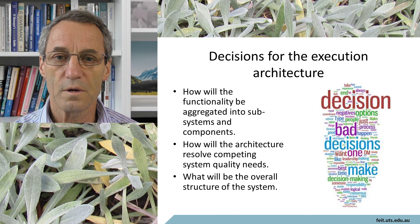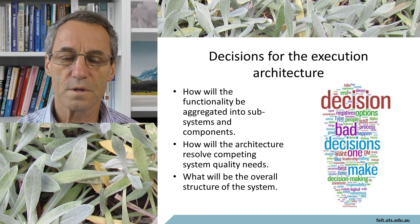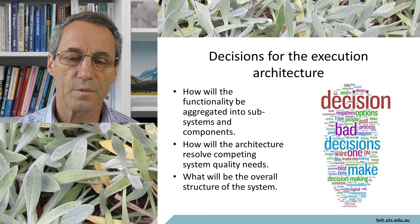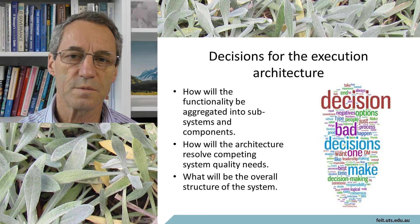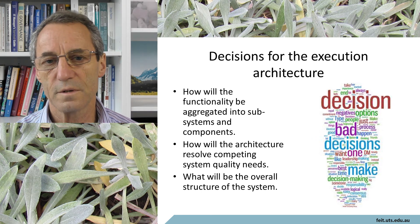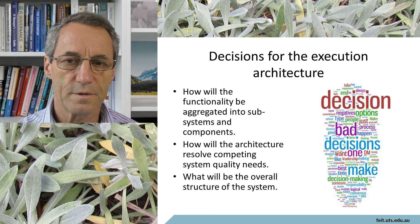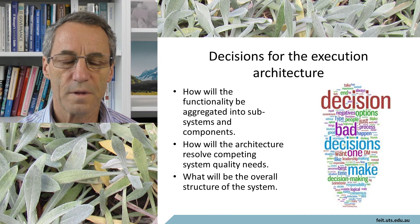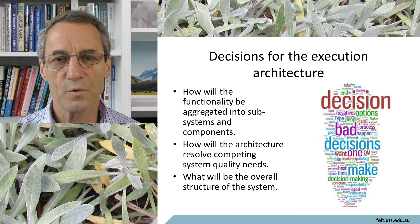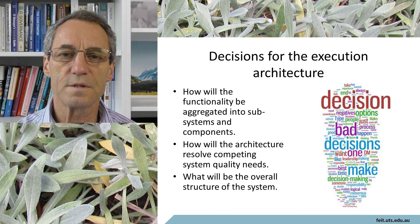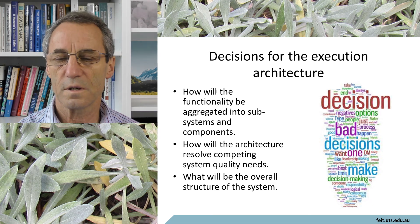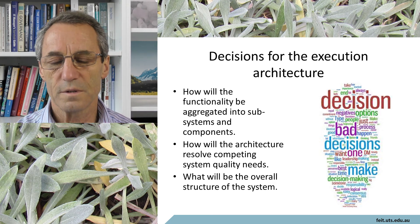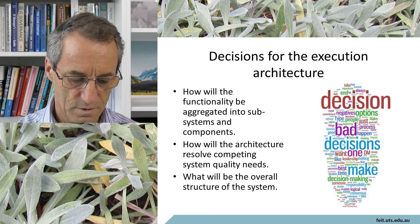The second thing largely resolved in the execution architecture is how you address competing system quality concerns — things like performance, availability, security, testability, usability, modifiability, and the more recent one: scalability. These tend to be largely resolved, though not completely settled, in the execution architecture.